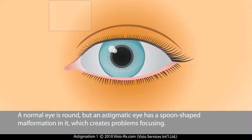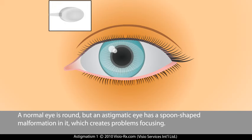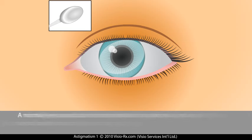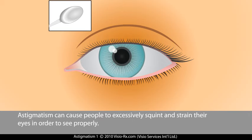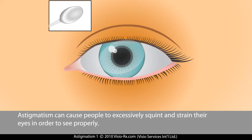A normal eye is round, but an astigmatic eye has a spoon-shaped malformation in it, which creates problems focusing. Astigmatism can cause people to excessively squint and strain their eyes in order to see properly.